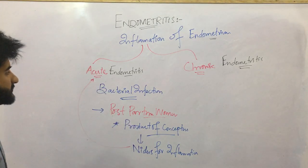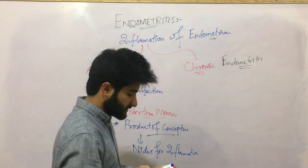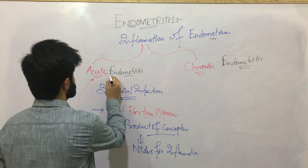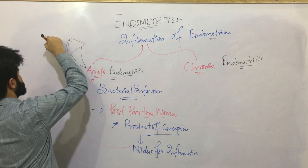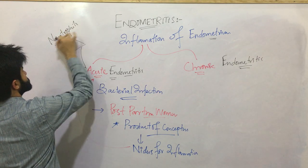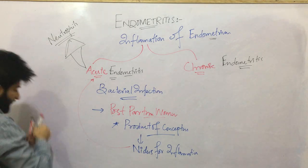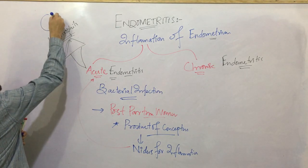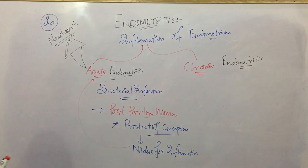How will we differentiate acute endometritis from chronic endometritis? We will differentiate acute endometritis by seeing neutrophils. If you are having a biopsy and we look at it under the microscope, neutrophils will be visible. Neutrophils will have a characteristic shape and will be clearly visible under the microscope.